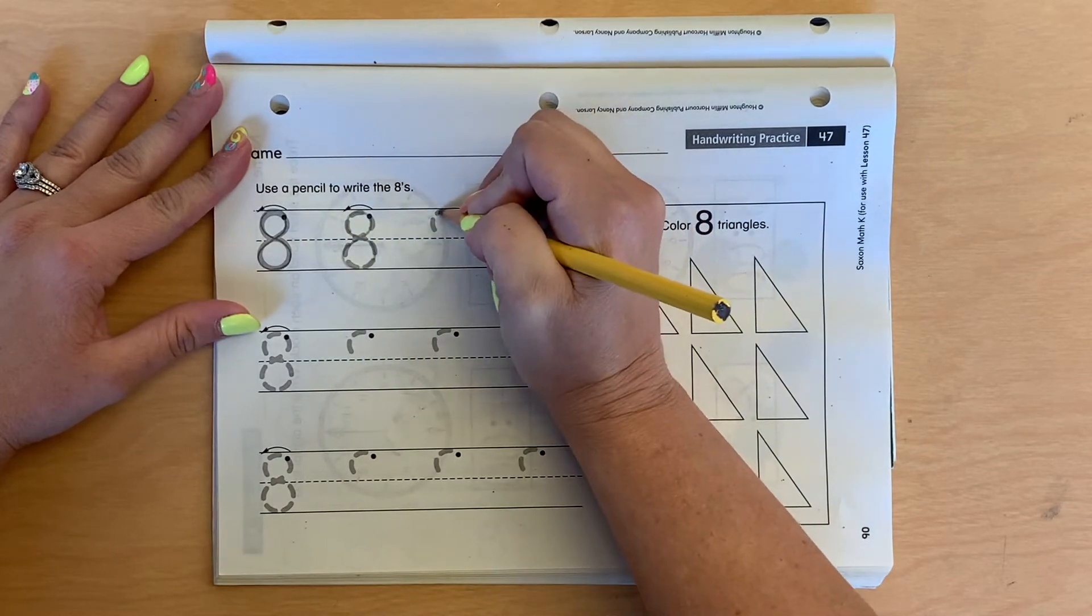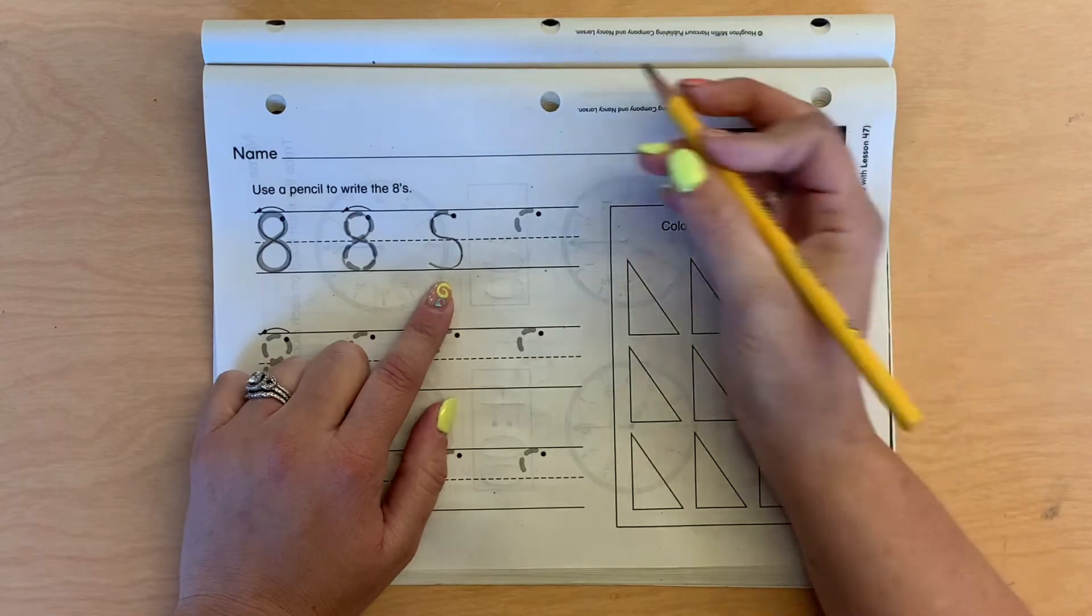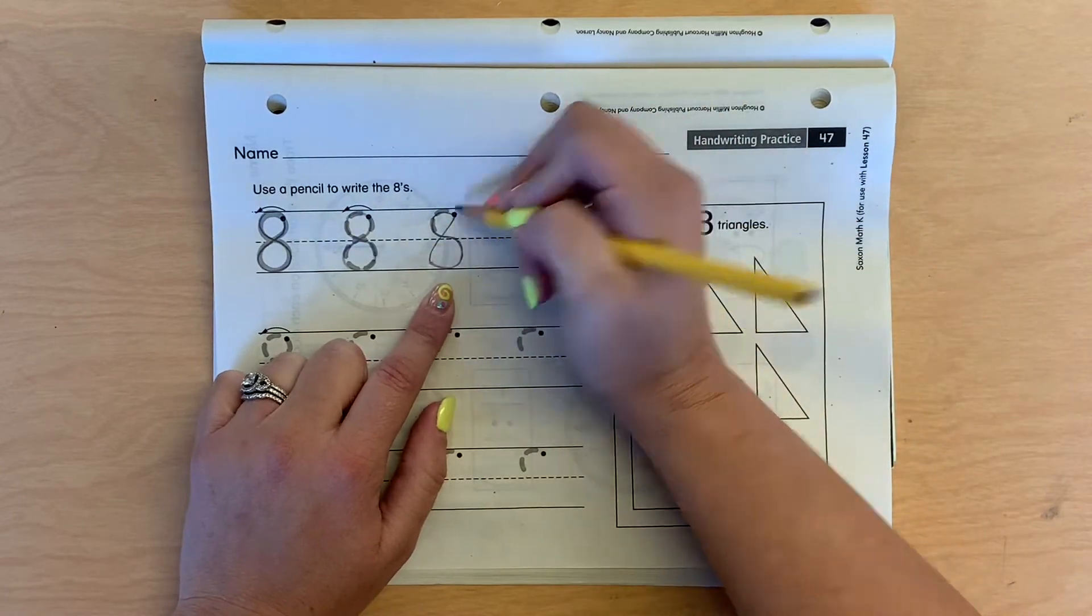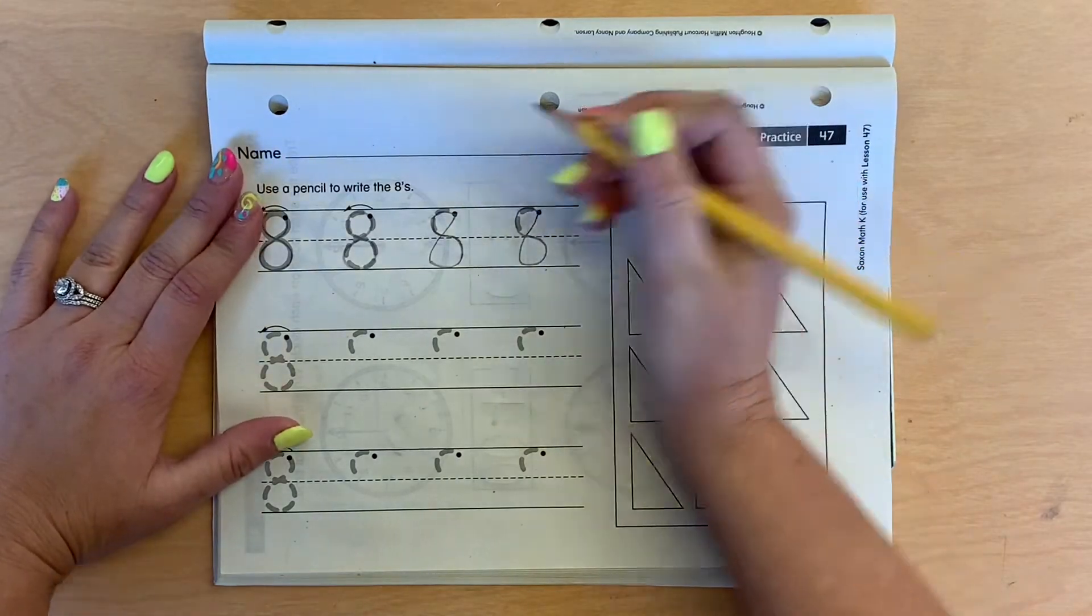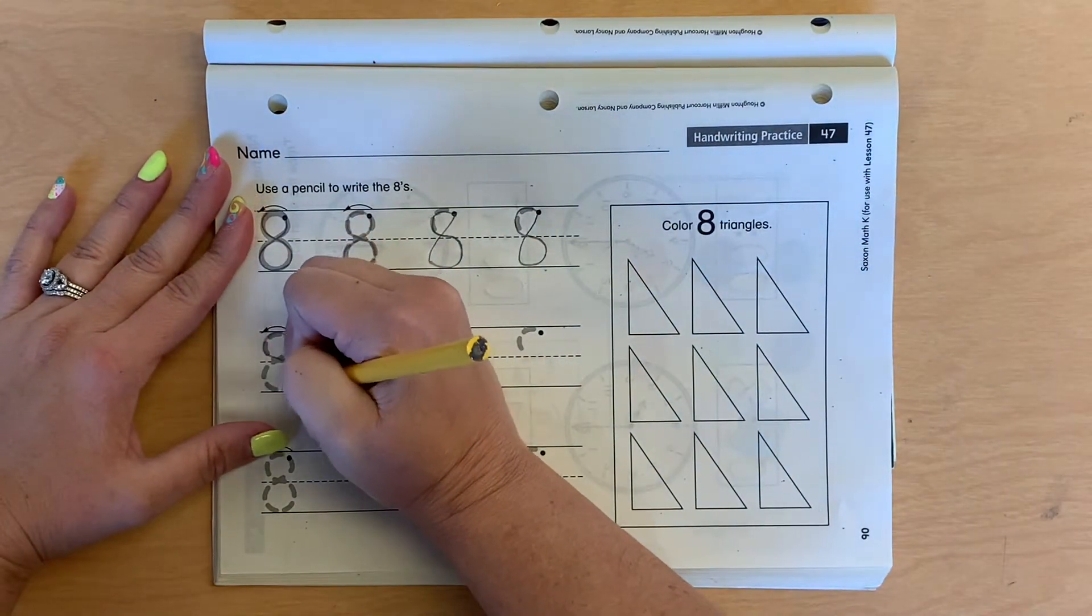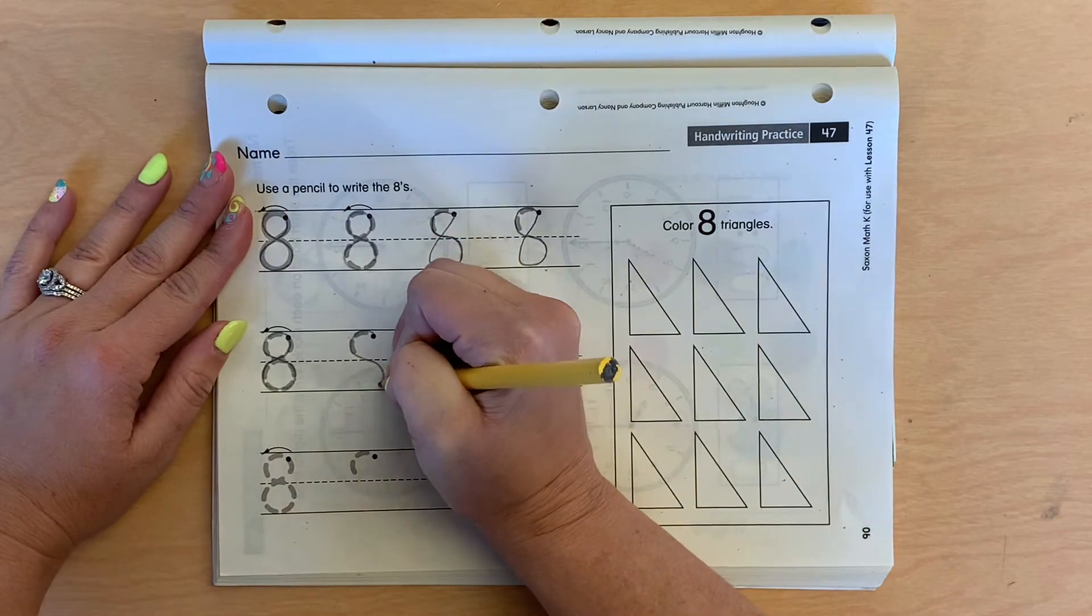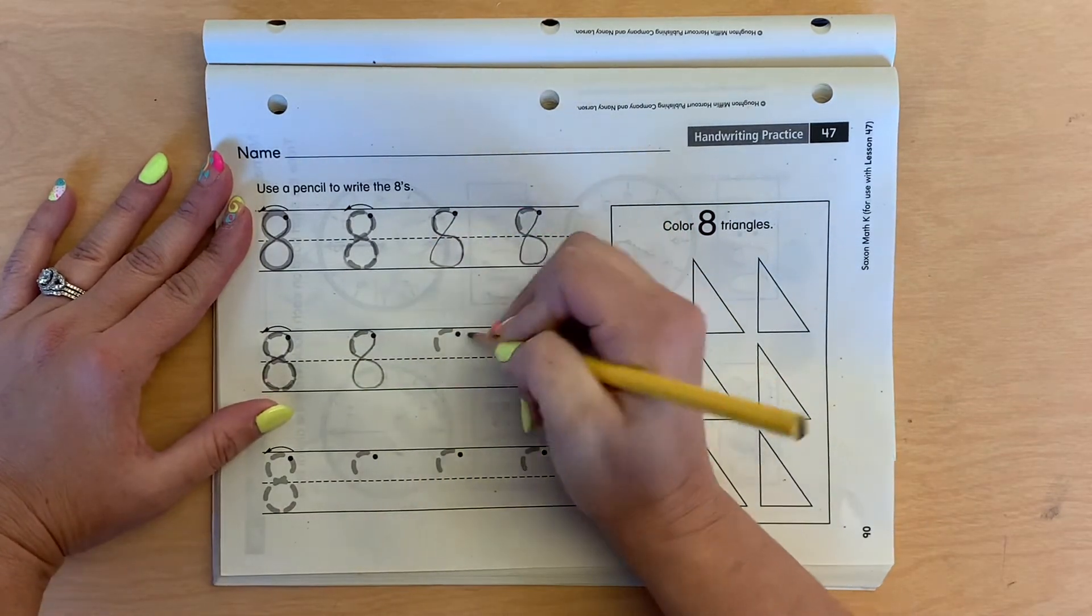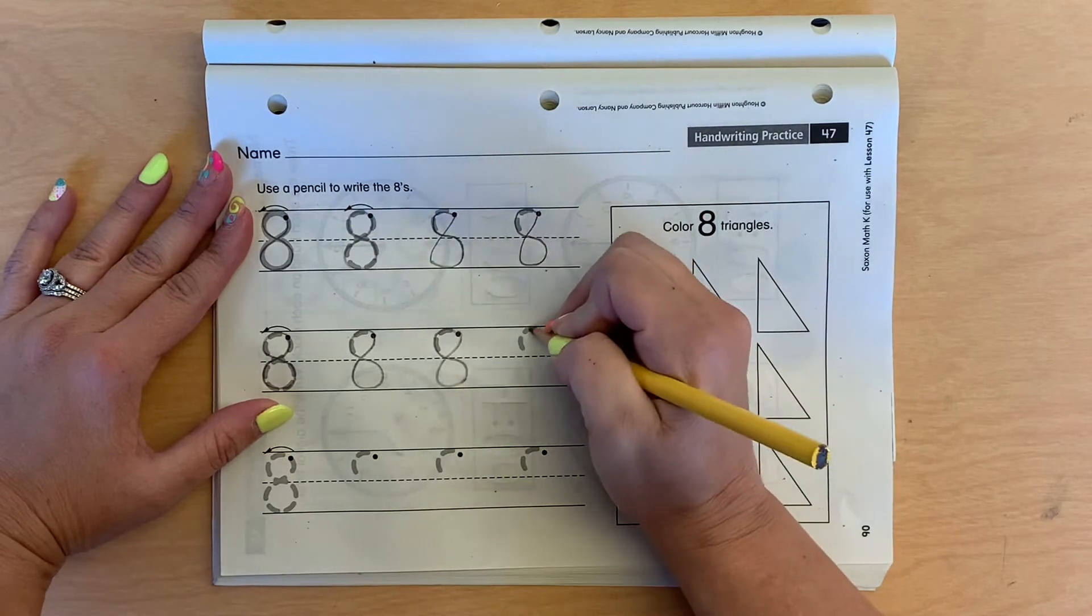So look at this one. We go this way, like an S. See how it's an S, and then we connect it back. Make an S and go back home. Make an S and go back home. Make an S and go back home. That's how we write the number 8.